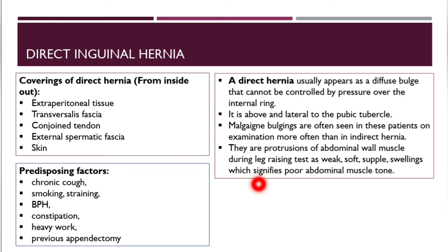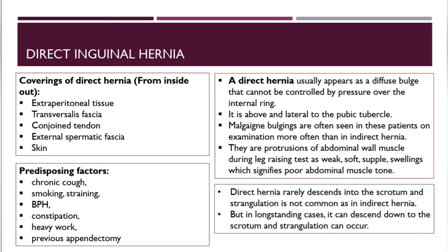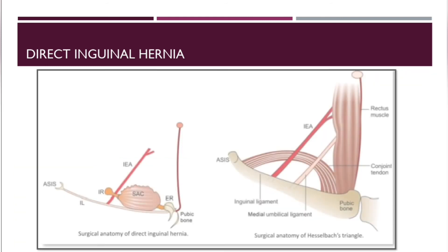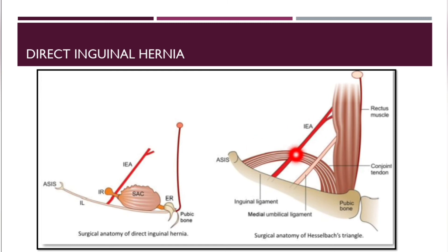Malgaigne bulgings are often seen in these patients on examination — more often than in indirect hernias. They are protrusions of the abdominal wall muscles during the leg-raising test, appearing as weak soft circular swellings, which signifies poor abdominal muscle tone. Direct hernias rarely descend to the scrotum and strangulation is uncommon compared to indirect hernias, but in long-standing cases, scrotal descent and strangulation can occur. On imaging, you can see the hernia medial to the inferior epigastric artery coming through this area.